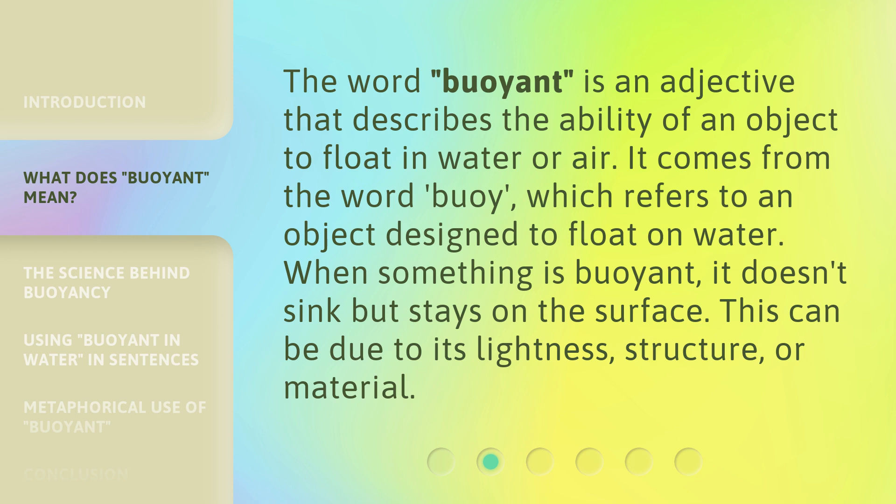The word 'buoyant' is an adjective that describes the ability of an object to float in water or air. It comes from the word 'buoy,' which refers to an object designed to float on water. When something is buoyant, it doesn't sink but stays on the surface. This can be due to its lightness, structure, or material.